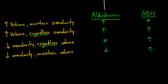Depending on what your volume status is and what your osmolarity status is, you could flip around all the arrows — decreased volume and maintain osmolarity, or decreased volume regardless of osmolarity — and you would basically just do the opposite of all these things. You can see how really any tweak in volume or osmolarity can help you predict what aldosterone and ADH will be doing.